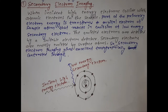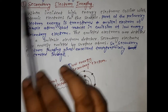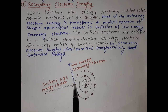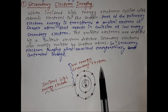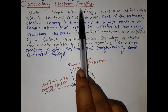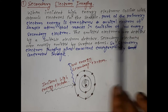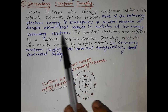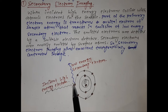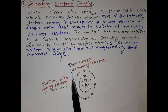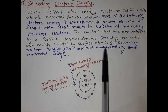The first imaging scheme is secondary electron imaging. When incident high-energy electrons collide with atomic electrons in the sample, part of the primary electron energy is transferred to an orbital electron of the sample atom, resulting in the emission of a low-energy secondary electron. The emitted electrons are detected by a suitable electron detector. Since secondary electrons are mostly emitted by surface atoms, secondary electron imaging gives an excellent topographically contrasted image.